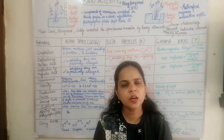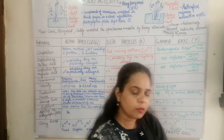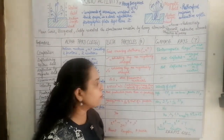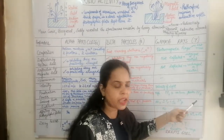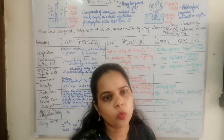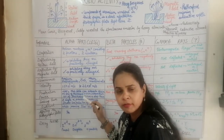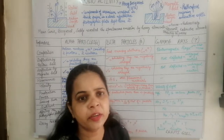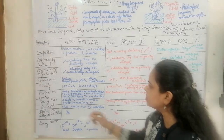Beta particles penetrate deeper into materials compared to alpha particles. Gamma rays have the highest penetration power — 100 times more than beta rays. So in summary: beta has more penetration power than alpha, and gamma rays have 100 times more penetration power than beta particles.